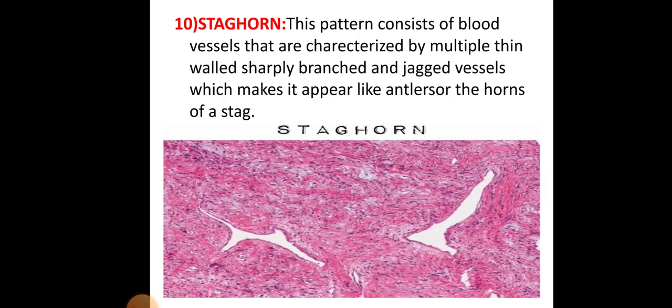The staghorn pattern consists of blood vessels characterized by multiple thin-walled, sharply branched and jagged vessels, which makes them appear like the antler horn of a stag.